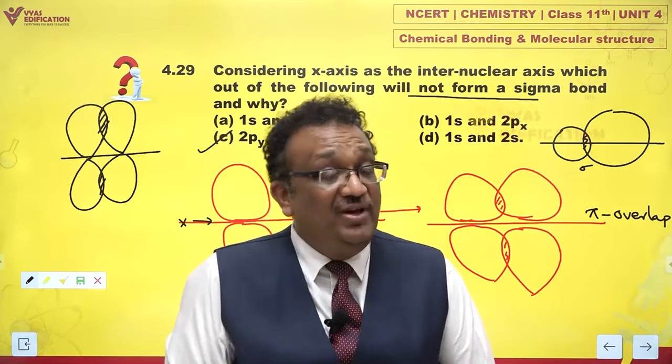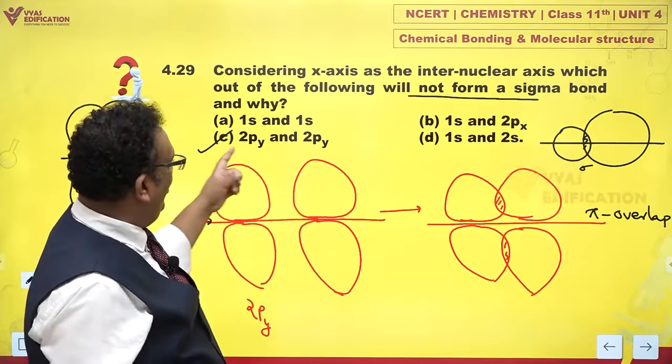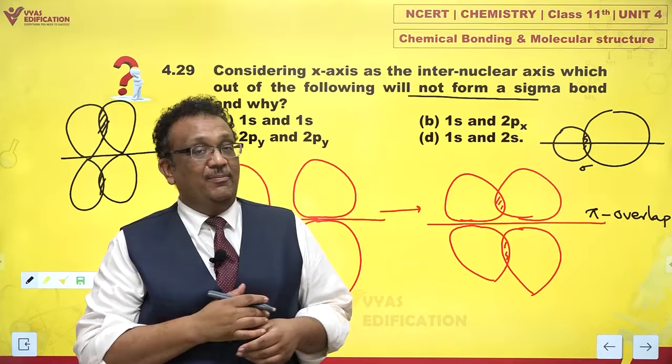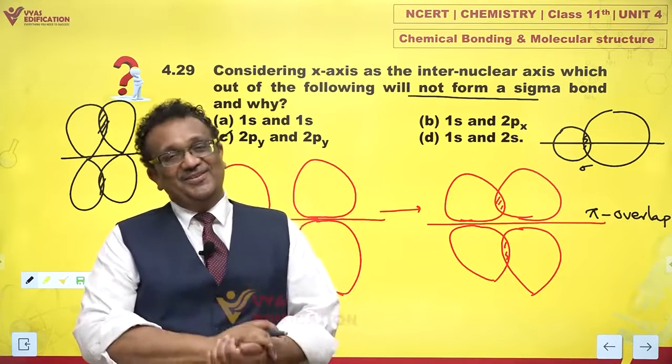So, a, b and d will give me a sigma. c will not give me a sigma. Rather, it will give me a pi bond. This is the answer with complete orbital overlap diagrams and the explanation.